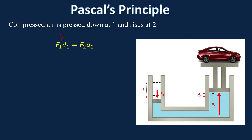At piston one, work is being done on the piston, and then piston two is doing work on the car. We do work to press this piston down, which does work to press the other piston up. There are no non-conservative forces here, so energy is conserved — the work done on the left equals the work done on the right. The force times distance is the same for both the left and right pistons.